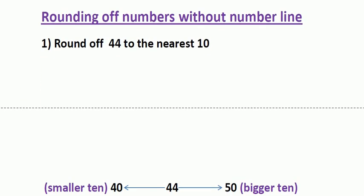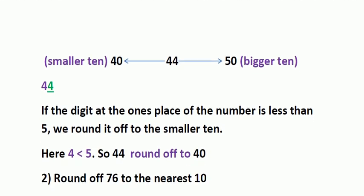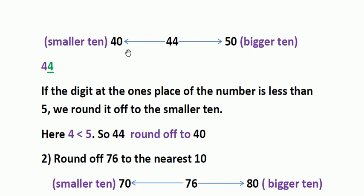Now we will see how to round off numbers without a number line. For example, round off 44 to the nearest ten. Step one: 44 lies between 40 and 50 — 40 is the smaller ten and 50 is the bigger ten. Next, we look at which digit is in the ones place of 44. If the digit at the ones place is less than 5, we round it off to the smaller ten. Here, the ones digit of 44 is 4, and 4 is less than 5, so we round off 44 to 40.